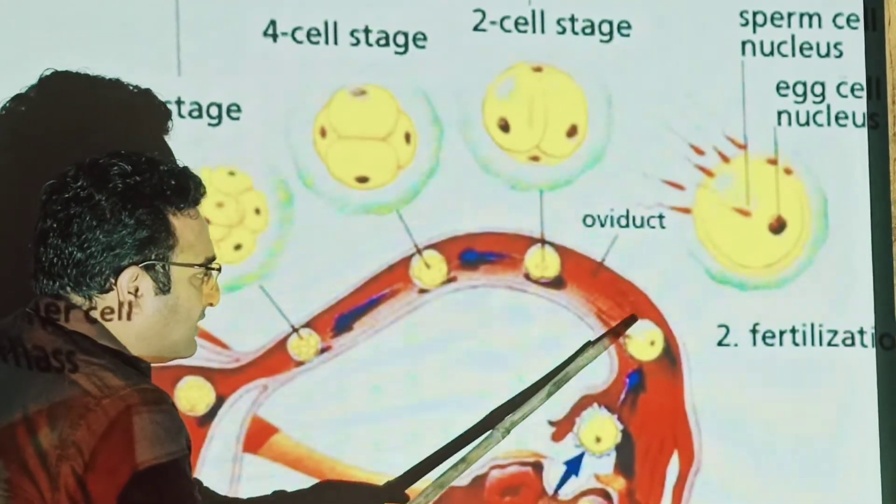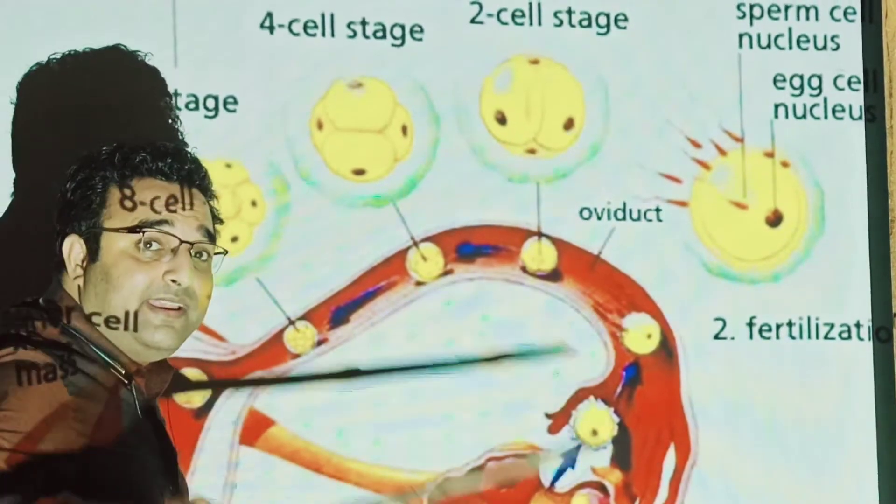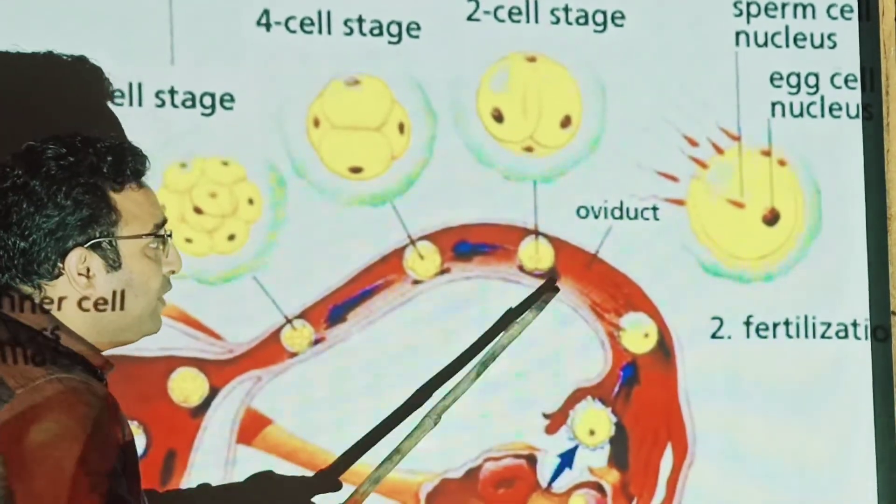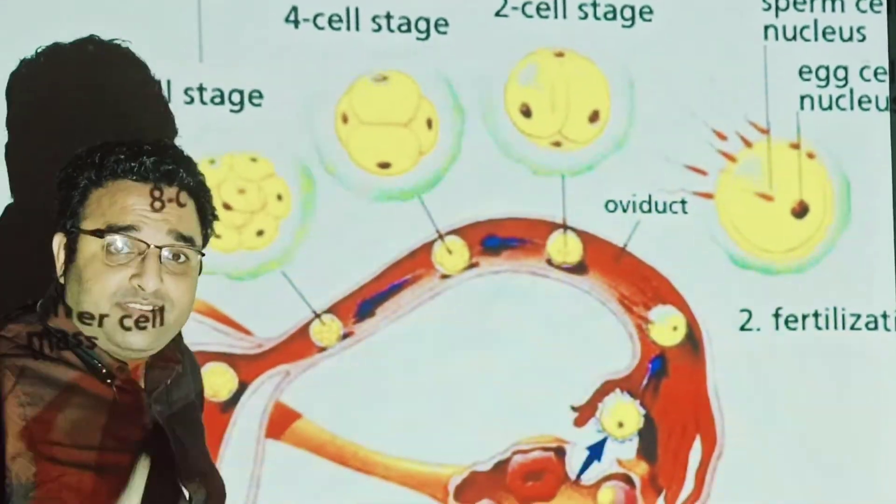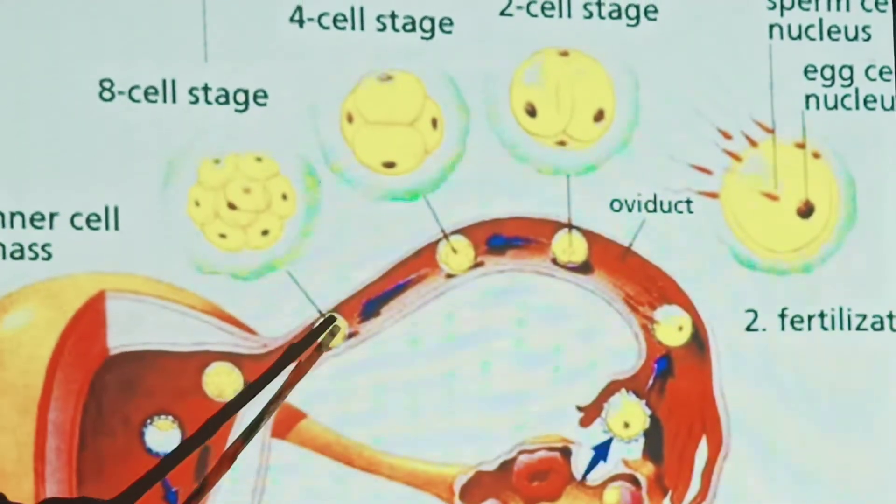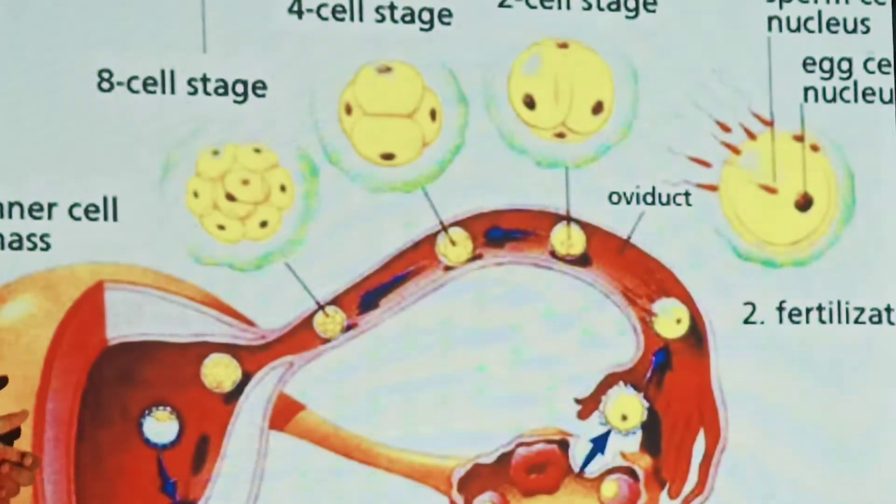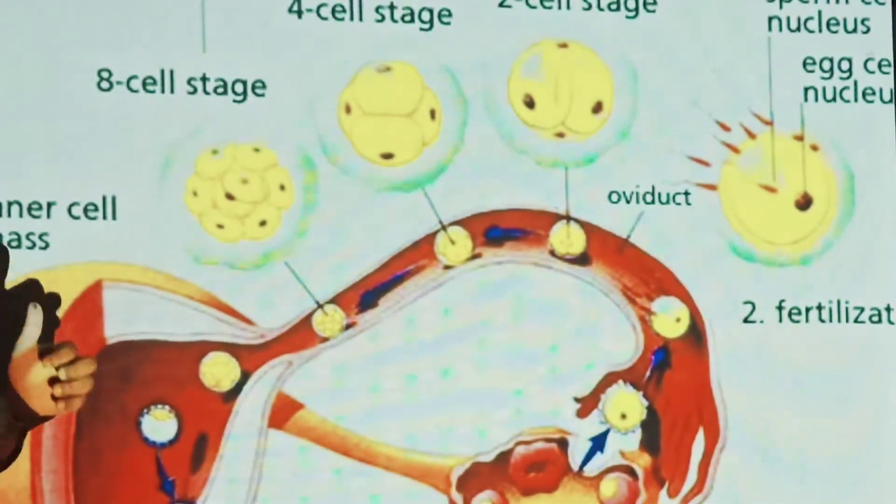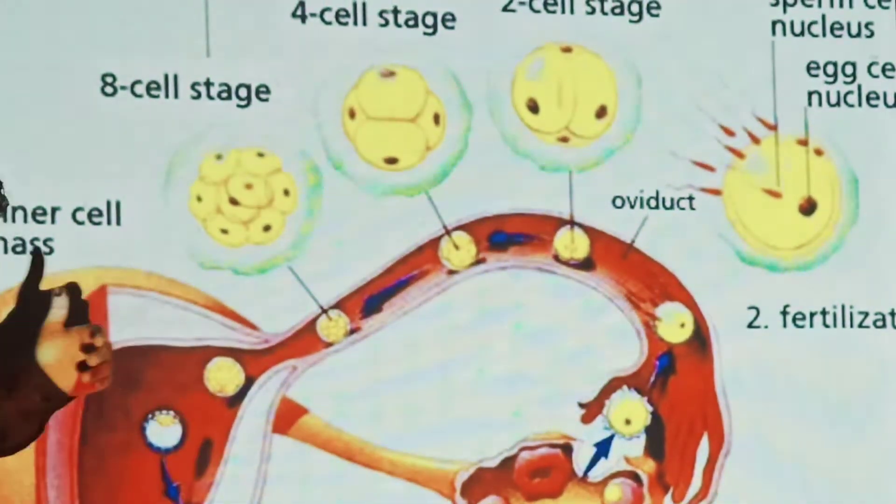After the fertilization, this zygote divides, keeps dividing, and they form an embryo. So embryo goes through different stages. First of all, two-cell stage, then four-cell stage, then eight-cell stage, and then it is differentiated into the outer mass layer of cells and the inner mass layer of cells.